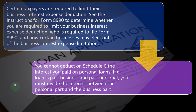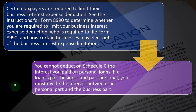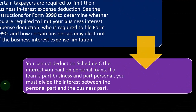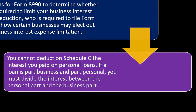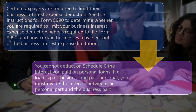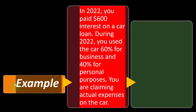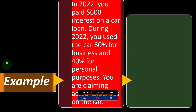You cannot deduct on Schedule C the interest you paid on personal loans. If you took a loan and used it for a personal vacation, for example, you can't deduct it on Schedule C. If a loan is part business and part personal, you must divide the interest between the personal part and the business part. Only the portion allocated to business use is deductible.